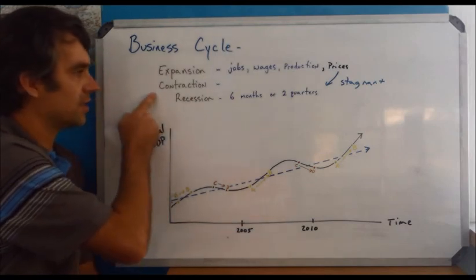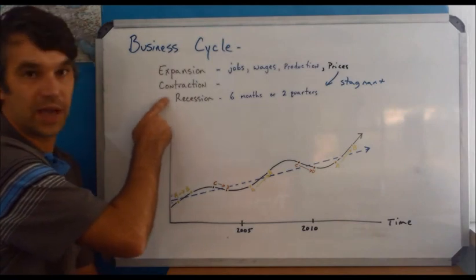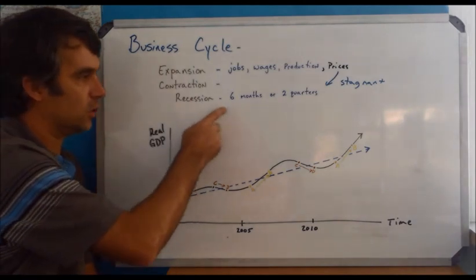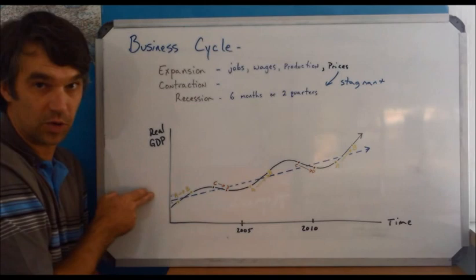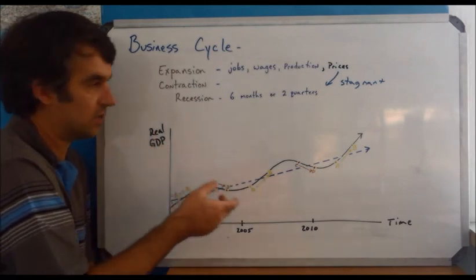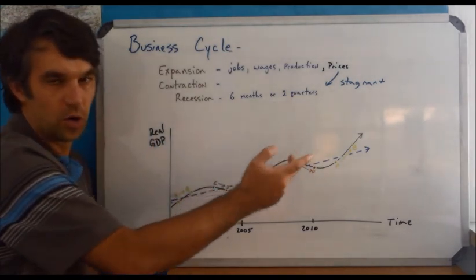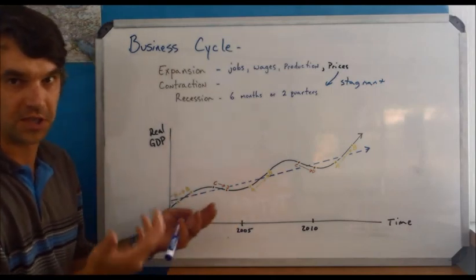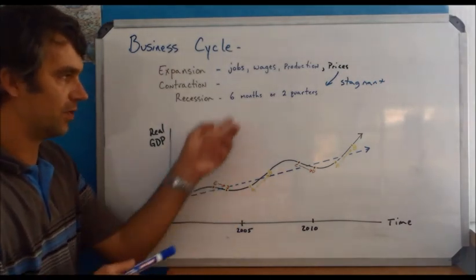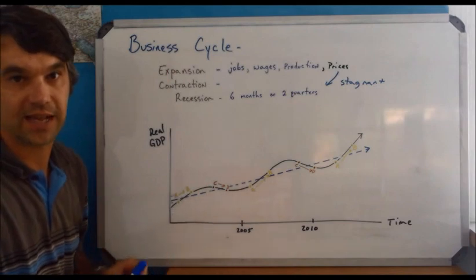A recession is a type of contraction. A contraction does not become a recession until the economy has been decreasing, so production has been decreasing, for six months or two quarters. Obviously, two quarters is six months, so that's two different ways of saying the exact same thing.